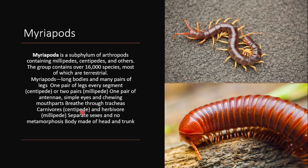If we talk about centipedes, they have one pair of antennae and simple eyes. The mouthpart is a biting type, breathing is through a trachea, and they are carnivores. Millipedes, on the other hand, are herbivores. In Myriapoda, sexes are separate, there is no metamorphosis, and the body is divided into head and trunk.